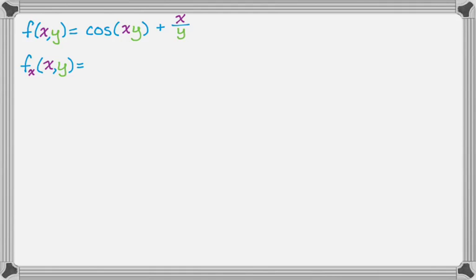So I need the derivative of cosine of something. So this is no different from Calc 1. The derivative of cosine of something is going to be negative sine of that thing. So I have negative sine of xy times the derivative of that thing with respect to x. So times the derivative of xy with respect to x, which gives me just 1 times y, so times y.